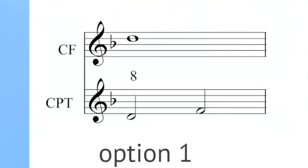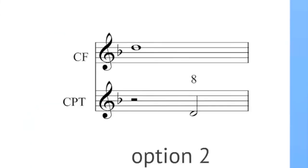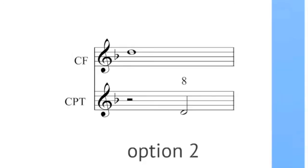If you're writing the counterpoint below you have two options. The first is to begin on the strong beat and the second is to begin on the weak beat, and both of those would be on the do, on the octave. Beginning your example on a rest is actually a really nice way to highlight the independence of the contrapuntal lines.